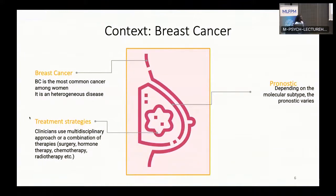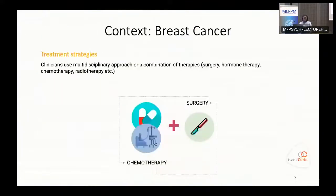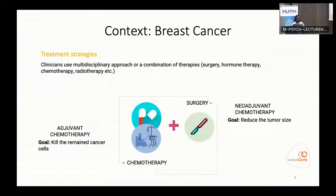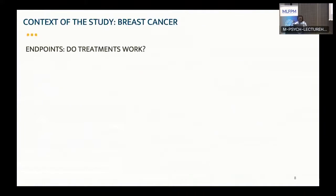Depending on those molecular subtypes, we have different prognoses but also different treatment strategies. Clinicians use a multidisciplinary approach or a combination of therapies. At the institute, we usually use a combination of chemotherapy and surgery. Depending on which comes first, we have neoadjuvant chemotherapy — done before surgery to reduce tumor size for a less invasive procedure — and adjuvant chemotherapy, which aims to kill remaining cells after surgery.